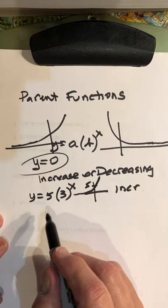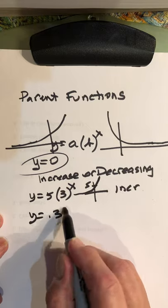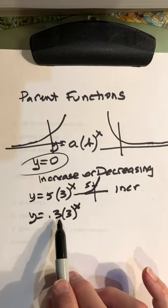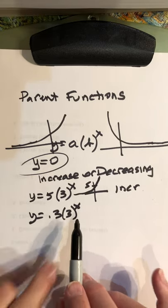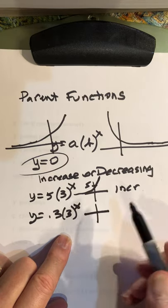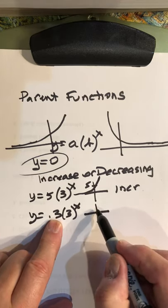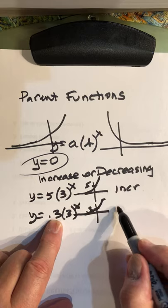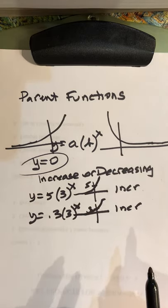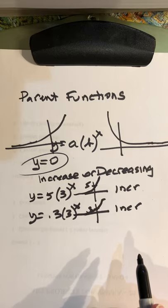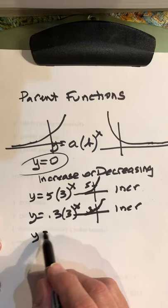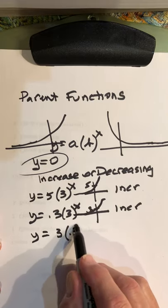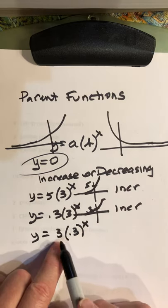What about y equals 0.3 times 3 to the x? Well, now we have a fraction, but the b is still larger than 1. So this is going to be a growth scenario. The intercept is going to be 0.3, so it's going to be much closer to the x-axis. And it's going to go like that. It's still going to be increasing.